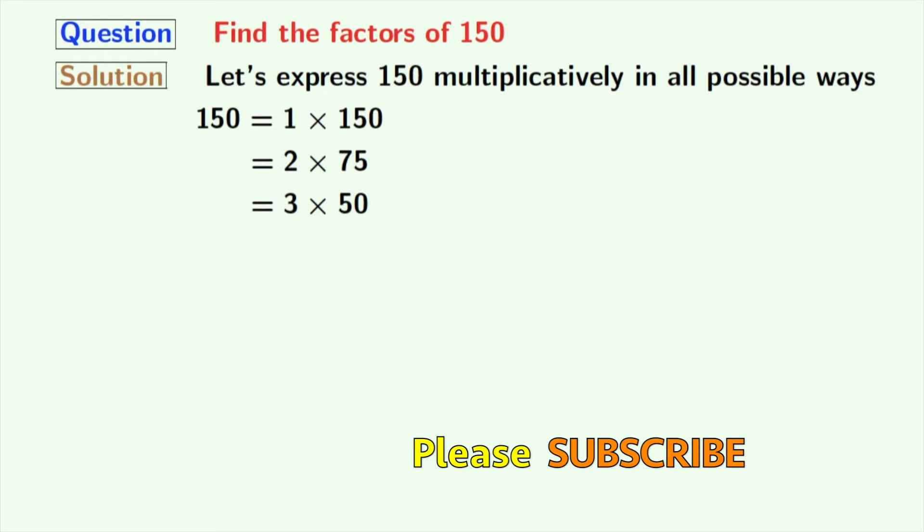Number 4 does not divide 150. So, we will try for 5 and we have 5 times 30 is equal to 150.